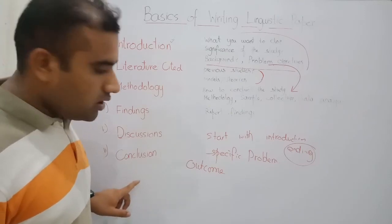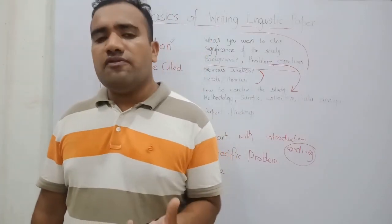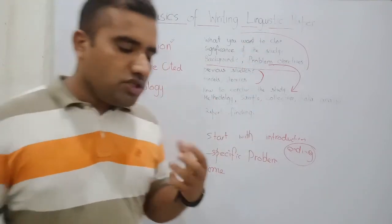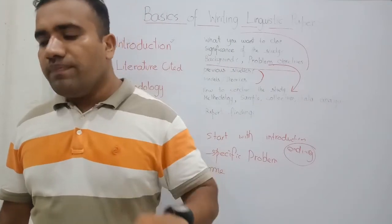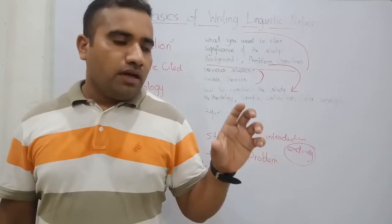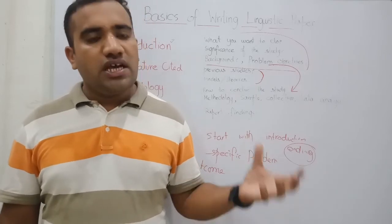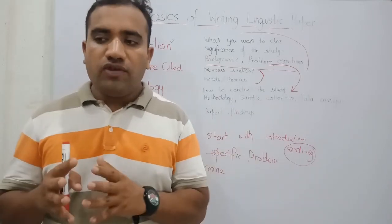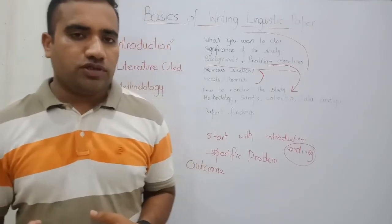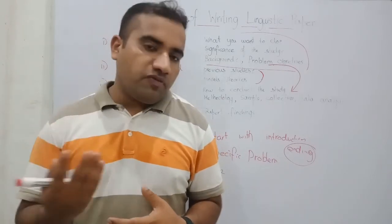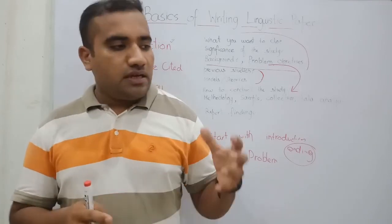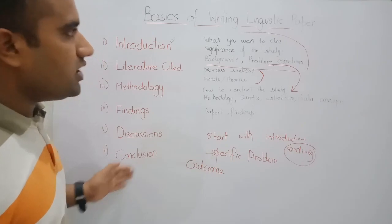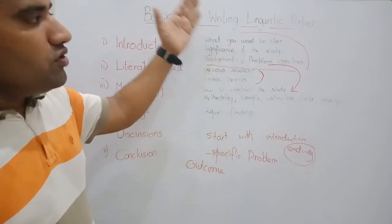The next is the conclusion. The conclusion is the outcome of your research — what you have gained from your research. In the conclusion, you write what gaps remain for future researches, what the implication of your research is, what domains this research can be applied in, what motivations exist for future researches, and how your study will motivate future researchers. You also explain how readers can get some ideas from your research paper.